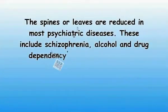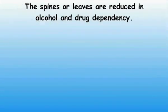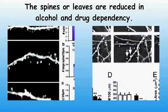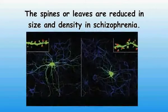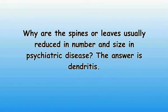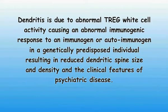The spines or leaves are reduced in most psychiatric diseases, including schizophrenia, alcohol and drug dependency, anxiety, depression, autism, Alzheimer's disease, and head injury. The spines or leaves are reduced in size and density in schizophrenia. Why are the spines or leaves usually reduced in number and size in psychiatric disease? The answer is dendritis. Dendritis is due to abnormal white cell activity causing an abnormal immunogenic response to an immunogen or autoimmunogen in a genetically predisposed individual, resulting in reduced dendritic spine size and density and the clinical features of psychiatric disease.